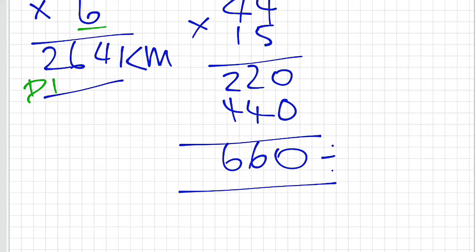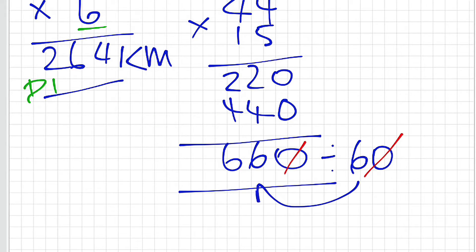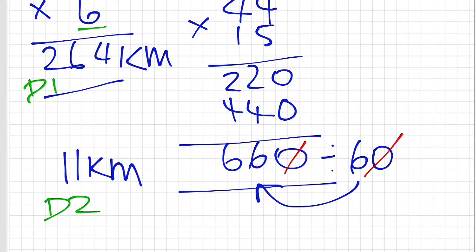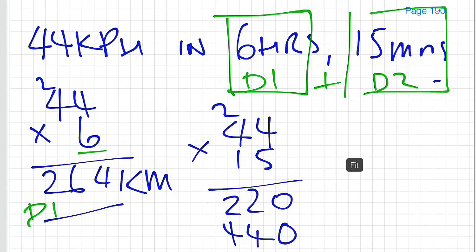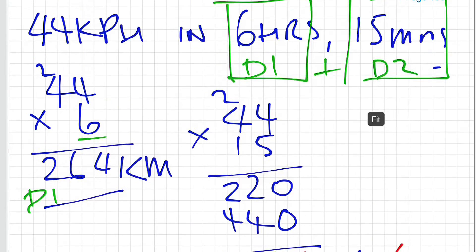We are still in minutes, so we need to divide that by 60. We can cross off the 0 on each side of the equation and then divide 6 into 66. That's going to equal 11. That now gives us our kilometres for D2, a portion of the distance because it's a portion of one hour.